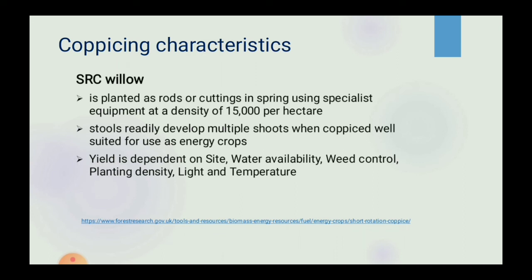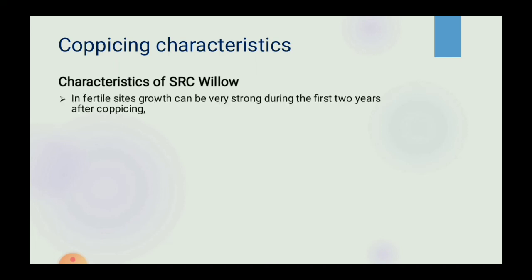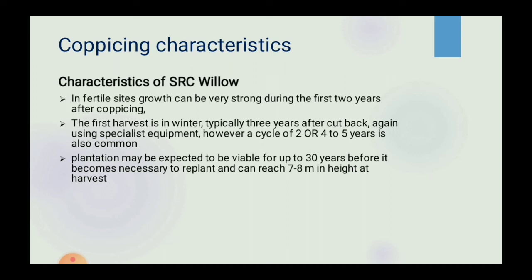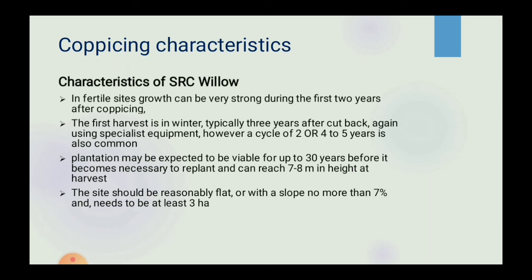Yield of SRC Willow is dependent on site, water availability, weed control, planting density, light and temperature. In fertile sites, growth can be very strong during the first 2 years after coppicing. The first harvest is in winter, typically 3 years after cut back, using special equipment. However, a cycle of 2 or 4–5 years is also common. The plantation may be expected to last about 30 years before it becomes necessary to replant, and can reach 7–8 metres in height at harvest. The site should be reasonably flat or with a slope no more than 7% and needs to be at least 3 hectares.